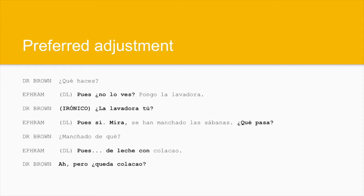That's our version. However, when we dub the voices in Spanish, we could perceive a few dislocations with this text, which would better be suppressed to prevent defects of decreased synchrony. We don't want that in a dubbing. The final script in Spanish, as you will have the opportunity to see in the last part of this video, will say what follows: ¿Qué haces? Pues no lo ves. Pongo la lavadora. ¿La lavadora tú? Pues sí, mira, se han manchado las sábanas, ¿qué pasa? ¿Manchado de qué? Pues de leche con colacao. Ah, ¿pero queda colacao?